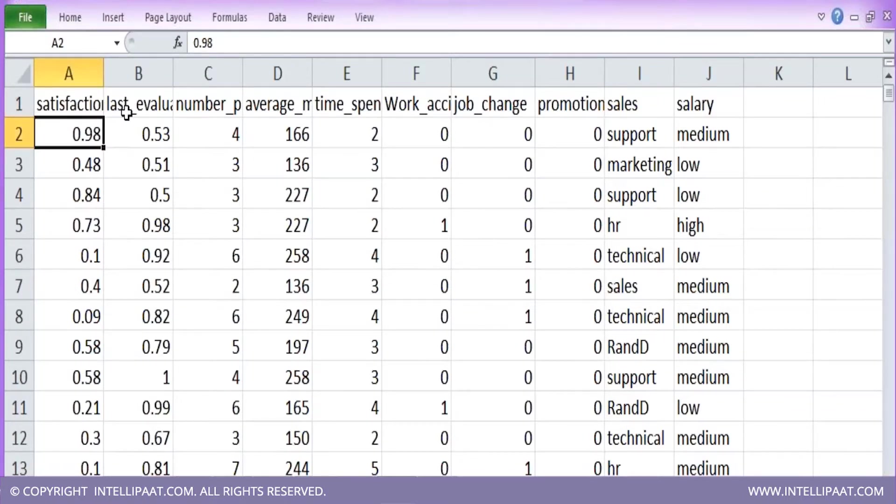The factors include satisfaction level 0.98, last evaluation, number of projects they worked, average monthly hours they spent, time spent in the company, salary, which department they are in, and whether their salary is medium, low, or high. So we see there are several factors based on which people decide for a job change.